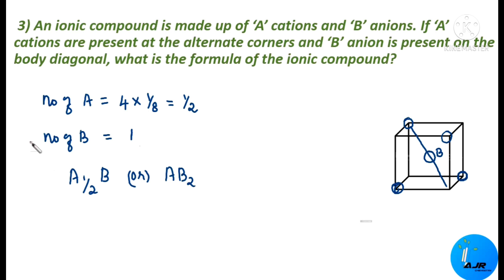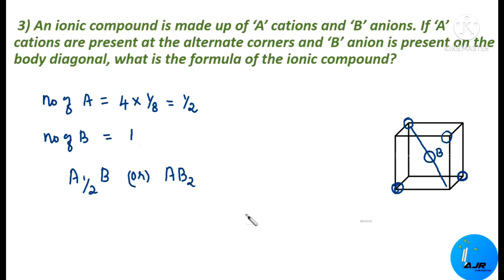A is half of B, so writing in whole numbers gives the formula AB₂. You might have now understood how to arrive at the formula of a compound through this video. I shall meet you with another important topic soon. Until then, this is Dr. Anitra Raj signing out. Thanks for watching.